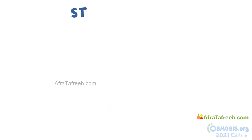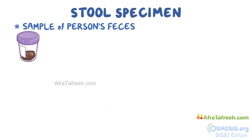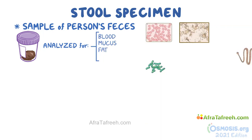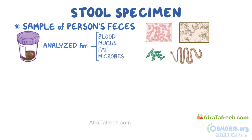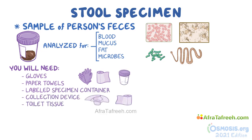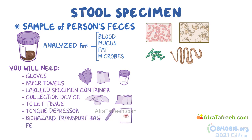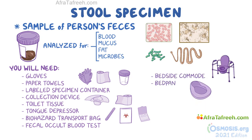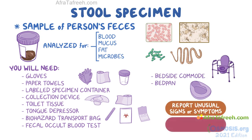As a quick recap, a stool specimen is a sample of a person's feces that can be analyzed for abnormal findings such as blood, mucus, fat, and microbes. To collect the stool specimen, you will need gloves, paper towels, a labeled specimen container, a collection device, toilet tissue, a tongue depressor, a biohazard transport bag, and a fecal occult blood test kit if ordered. For clients that can't use the toilet, you'll also need a bedside commode or a bedpan. After the procedure, make sure you report any unusual signs or symptoms to the nurse and leave proper documentation.